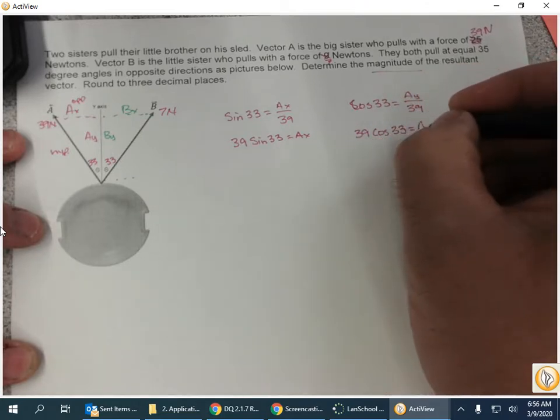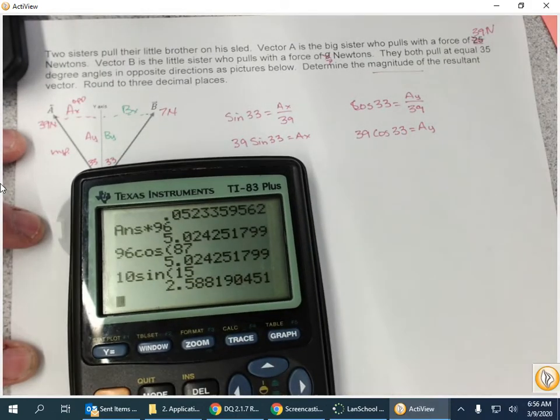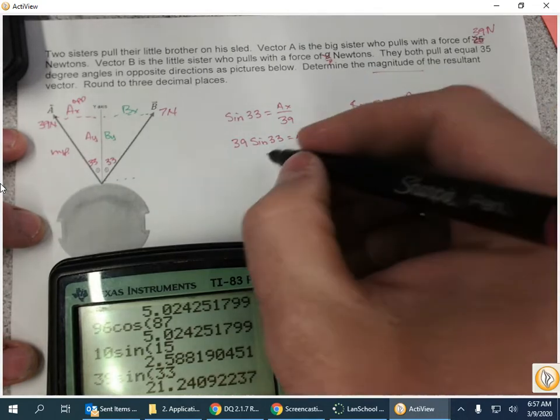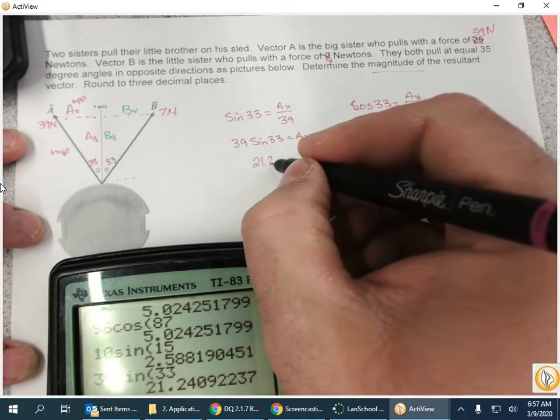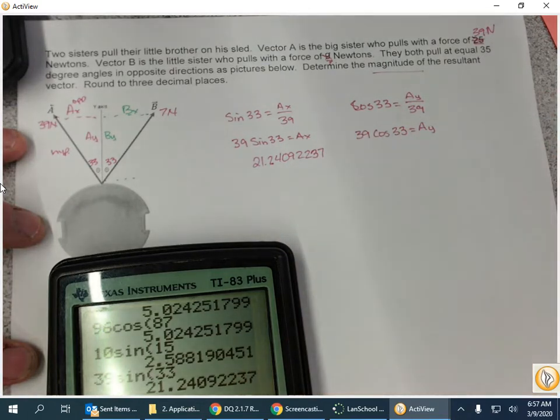So let's go ahead and use the calculator, in degrees mode. 39 times the sine of 33, and that's 21.240922237.